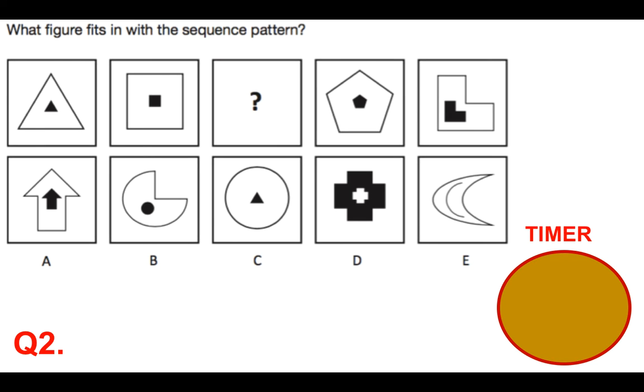Question number two. What figure fits in with the sequence pattern? So you're looking for which figure from A, B, C, D or E fits there where the question mark is. You've got 15 seconds only. And if you look, here's a clue. If you look along the top line, there's a black shape in the centre. And there's only three of them with a black shape in the centre across the bottom, so you can eliminate two straight away.